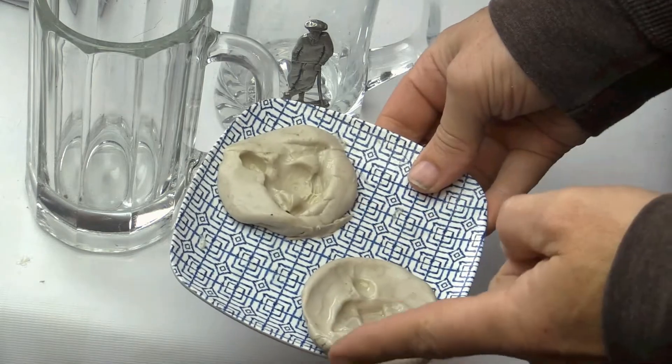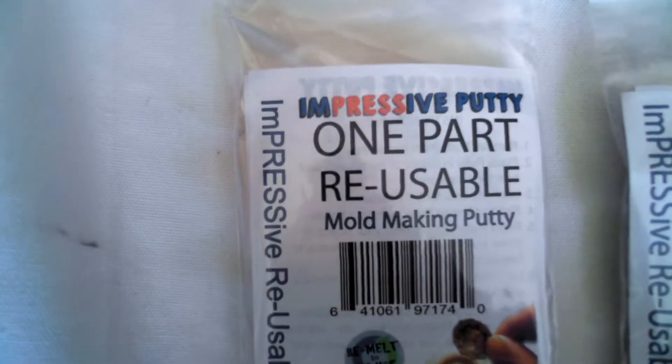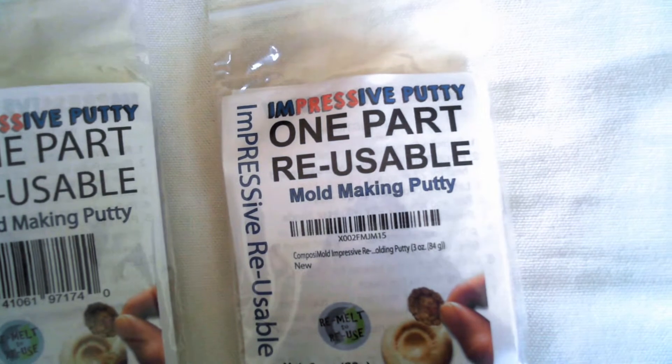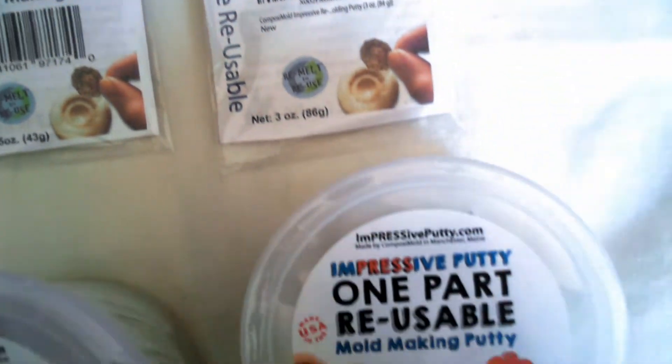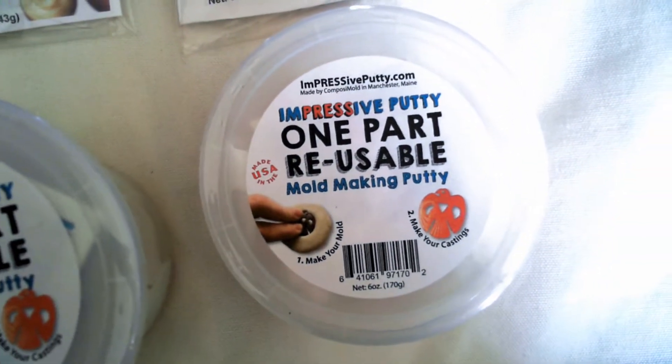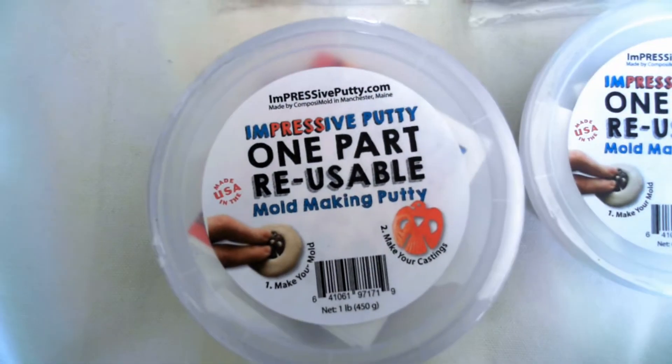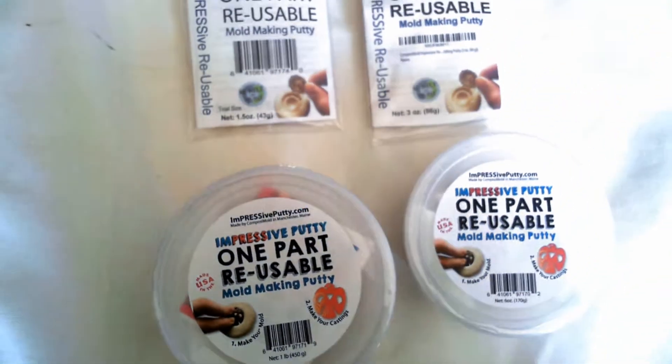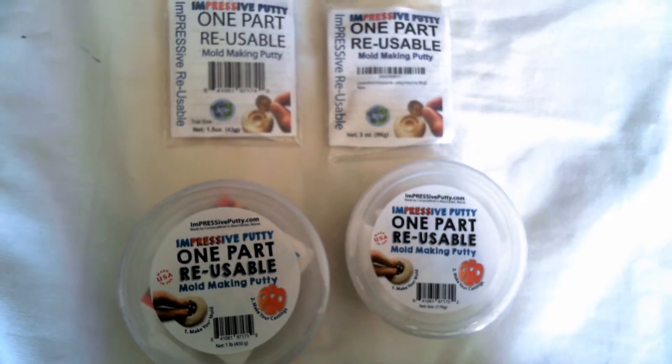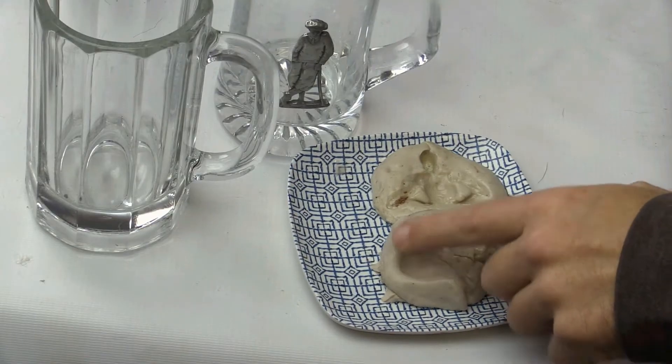I'm using some previously used impressive putty. I put it in the microwave for about 25 seconds to soften it. While that is happening, let me show you the impressive putty. Several sizes starting at one half ounce, this six ounce size, and here we also have the one pounder. We also have a five pounder. Use impressive putty because it is reusable, easy, and works really well.